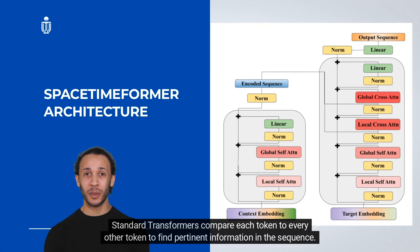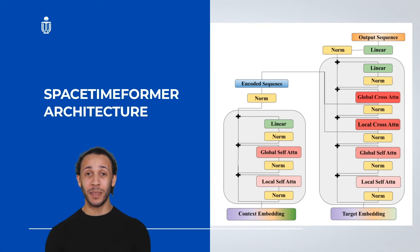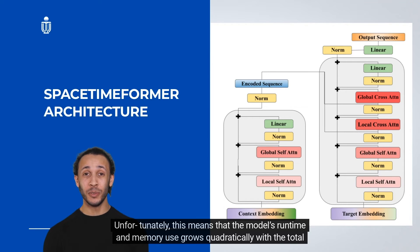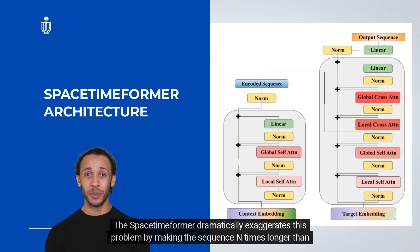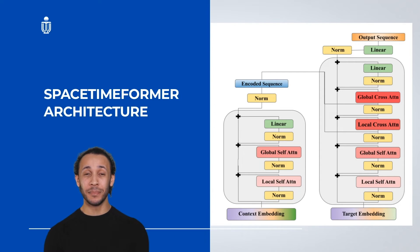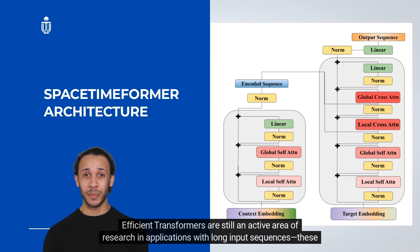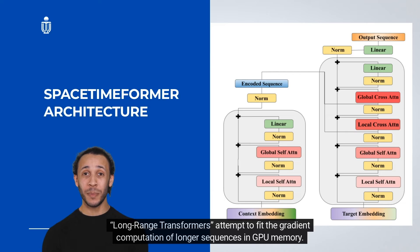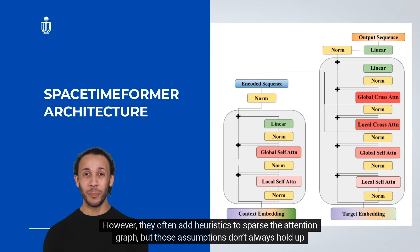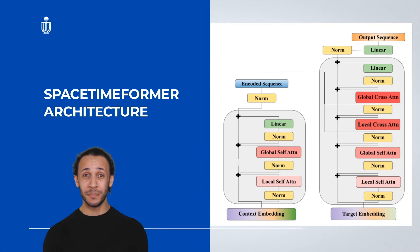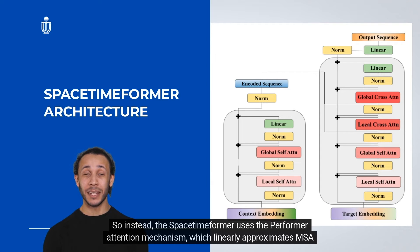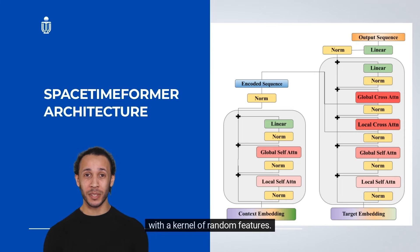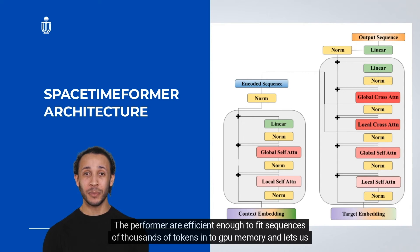Standard transformers compare each token to every other token, meaning runtime and memory grow quadratically with input length. The Spacetime Former dramatically exaggerates this problem by making the sequence n times longer. Efficient transformers remain an active research area, and long-range transformers attempt to fit gradient computations into GPU memory. However, sparse attention heuristics don't always hold outside NLP. Instead, the Spacetime Former uses the Performer attention mechanism, which linearly approximates MSA with a random feature kernel. The Performer is efficient enough to fit sequences of thousands of tokens into GPU memory and allows training in a few hours on a single 40 GB GPU node.